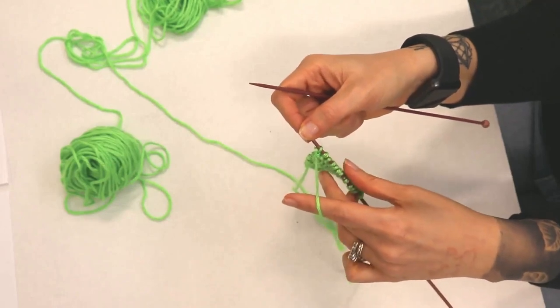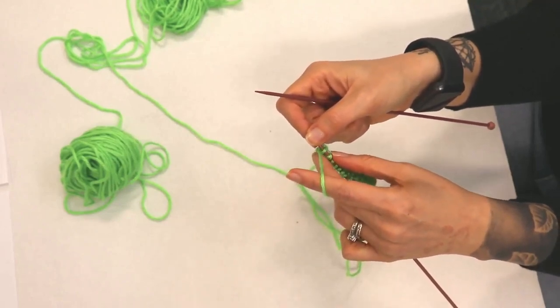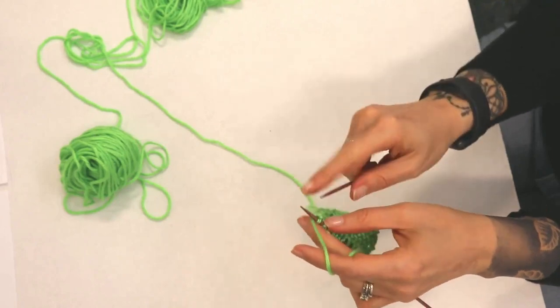Insert the point of the right needle from front to back into the first cast-on stitch on the left needle, opening up that stitch.